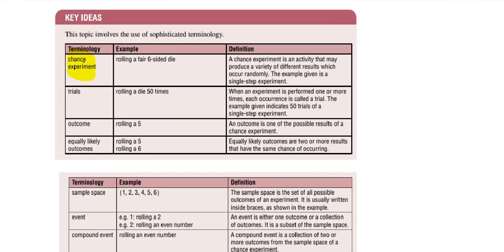Let's look at the key ideas and terminology. First is a chance experiment — the definition is an activity which may produce a variety of different results which occur randomly. The example is a single step experiment, meaning you do something once and can get a variety of outcomes. Most examples here refer to a dice: a normal six-sided dice has six different numbers you could get.